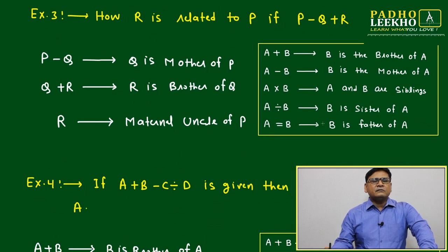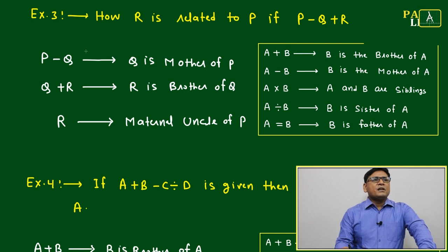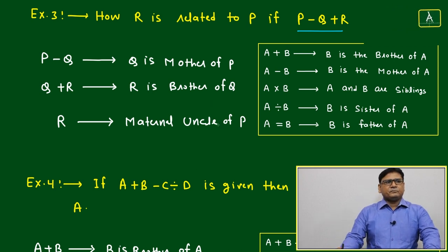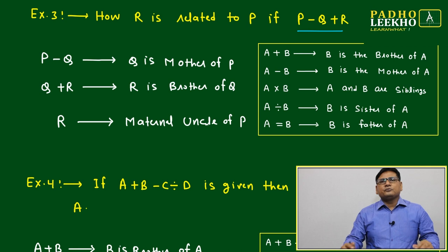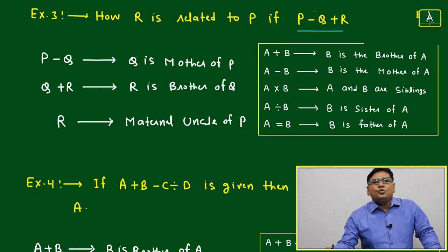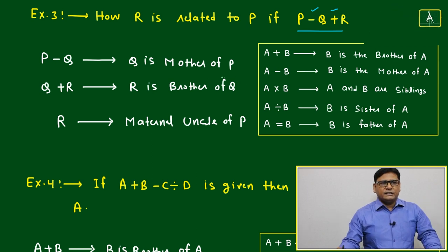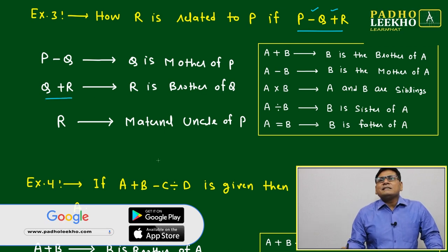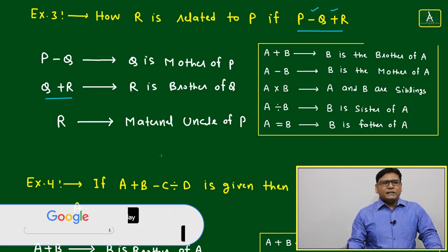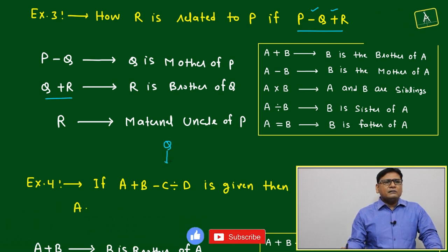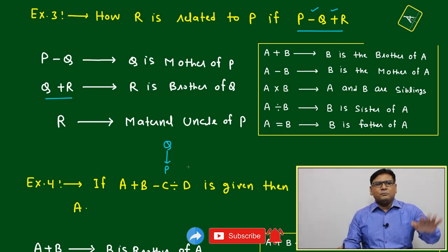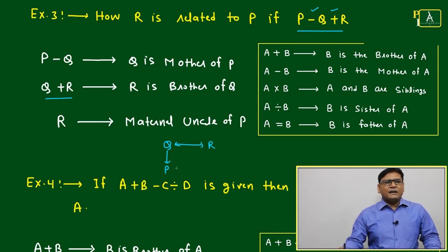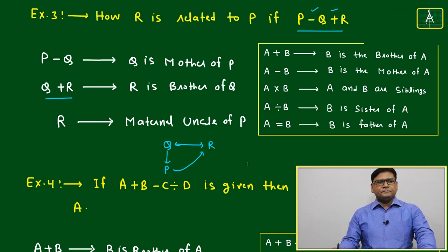I have summarized these in a table on the right side. Question number 3: how is R related to P if P minus Q plus R is given? We break it down — two arithmetic signs means two relations. P minus Q: Q is the mother of P. Q plus R: R is the brother of Q. In the family tree, Q is one generation above P, and R is at the same level as Q, so R is the maternal uncle of P.